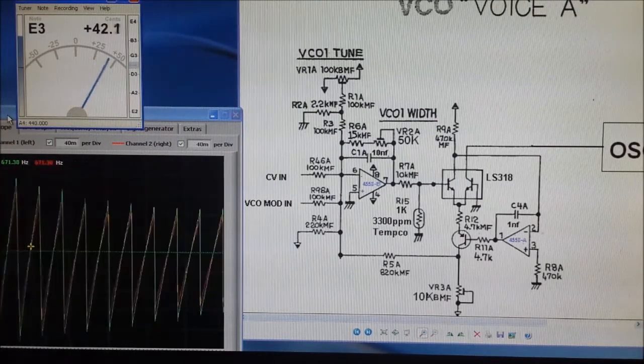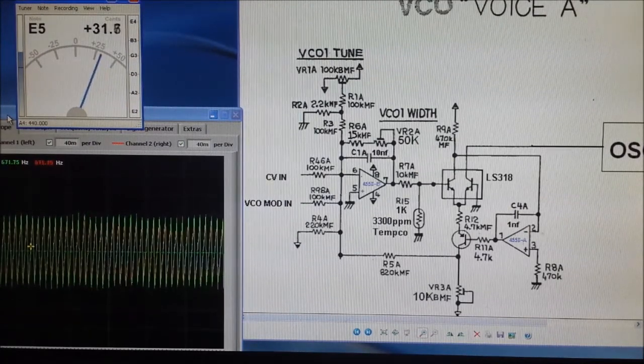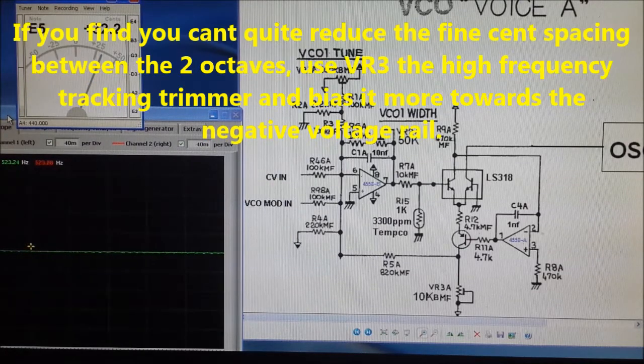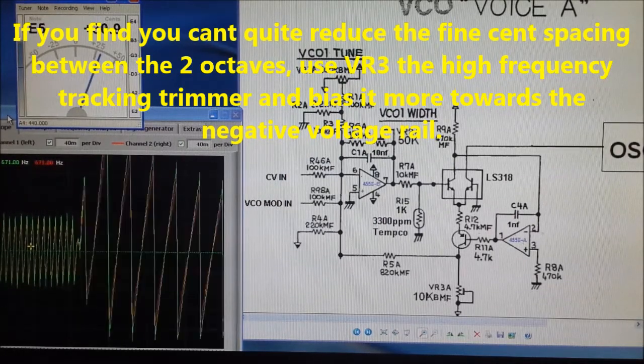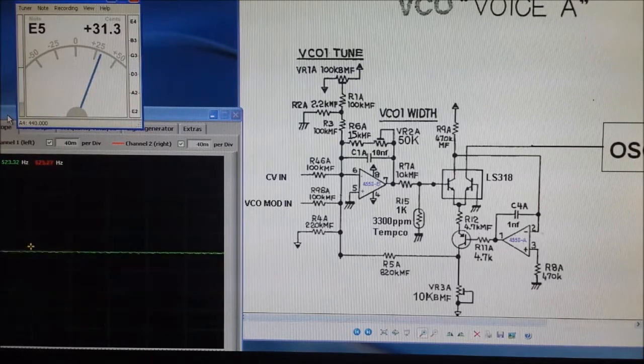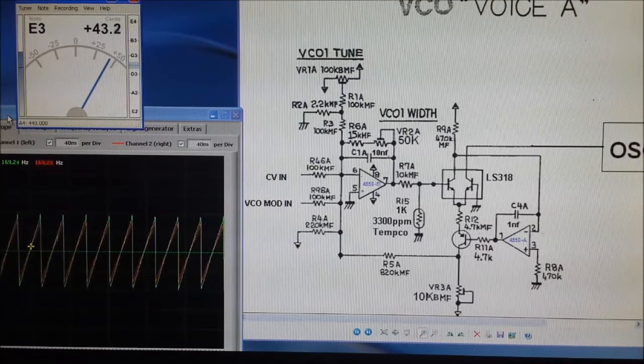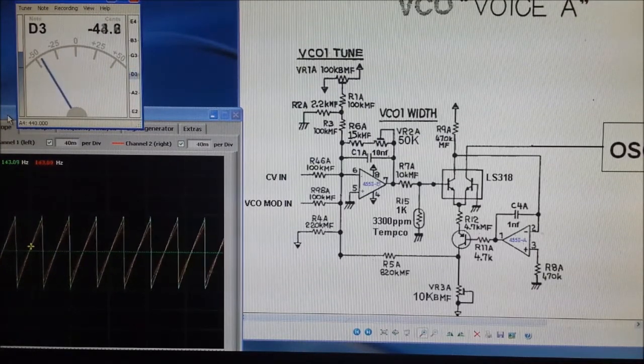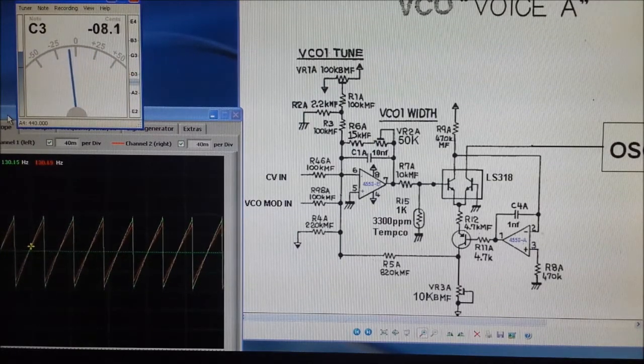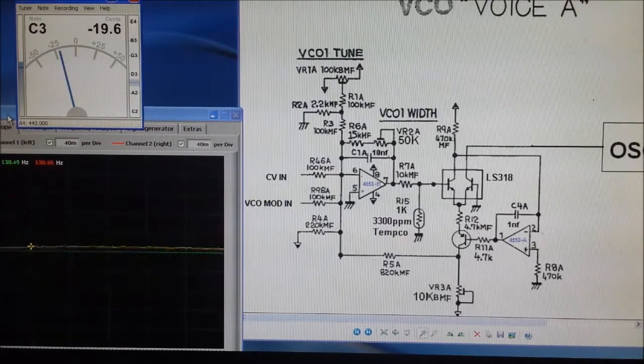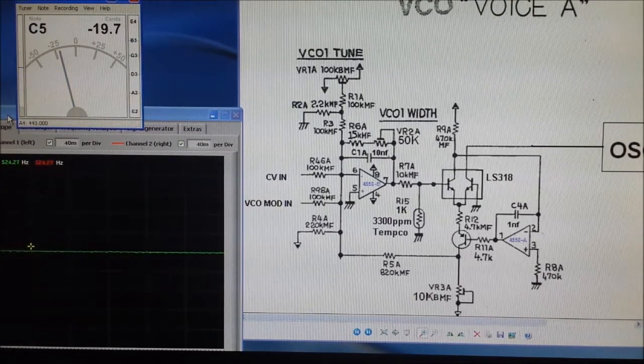That's E3, maybe try and trim that just a tiny touch more. There's a few cents out, not a lot in it to be honest. Let's just try and trim that again. That's good, that's not too bad. There's not much of a gap there now. If I hold down my C3, I'm going to turn VR1 until I get back to C3.